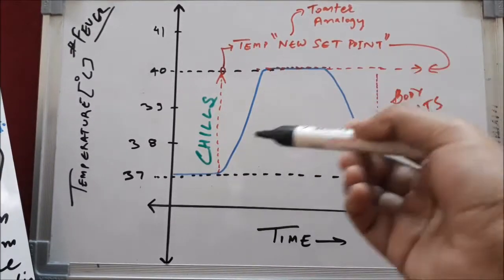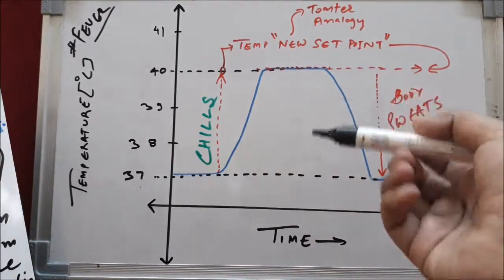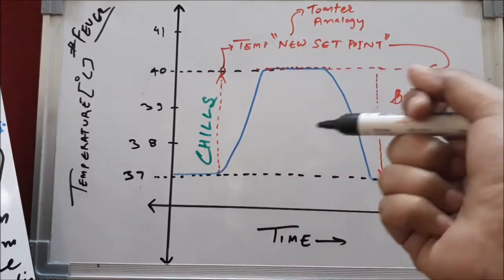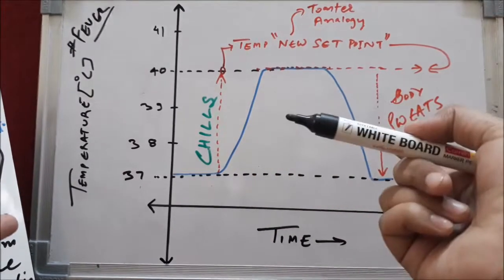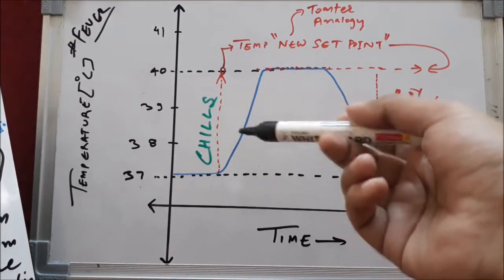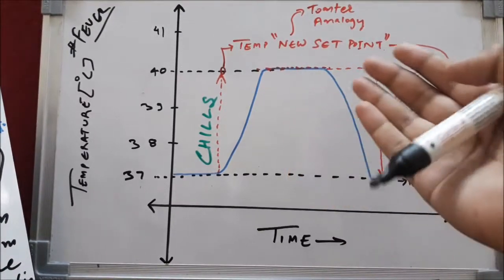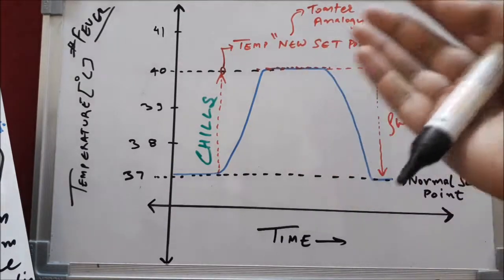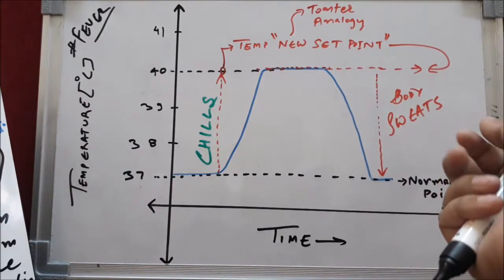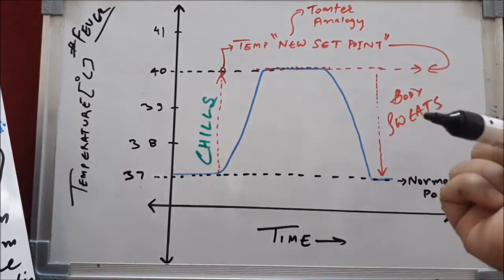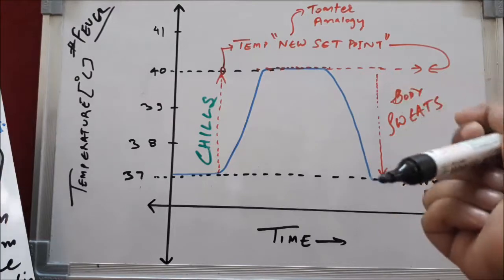Looking at the graph, fever typically starts with chills. Chills occur through vasoconstriction or shivering. The signal for shivering — what tells our muscles or blood vessels to shiver or vasoconstrict — is dependent on the higher centers of the body, which we will discuss shortly.